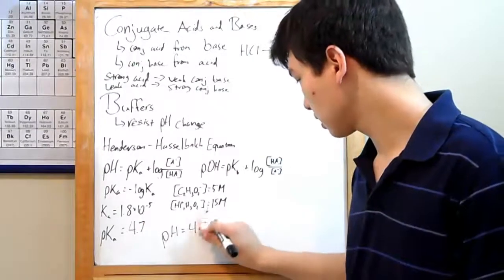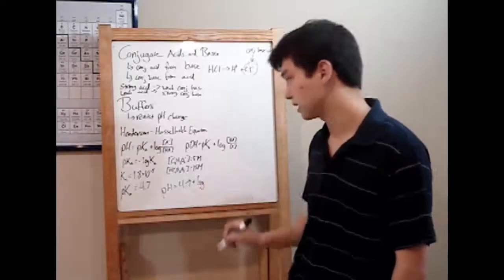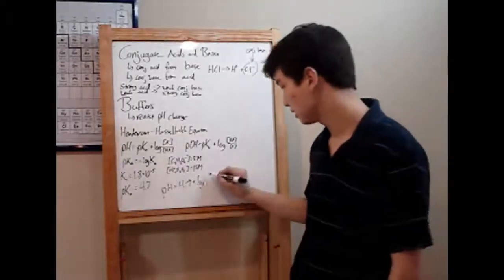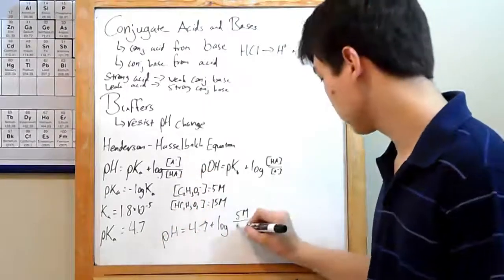plus the log of your A minus ion, that's your acetate ion, 5 molar, over your HA, undissociated acid, 15 molar, that's your acetic acid.